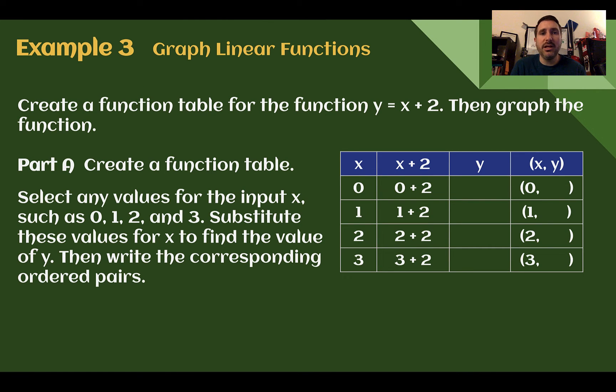Example three, graph linear functions. Create a function table for the function y equals x plus two, then graph the function. So first, let's create a function table. Here, they made one for us. We want to select appropriate input values. Since we have this as our rule, it doesn't necessarily matter what they are, but whole numbers are generally going to be easier when we're graphing, which is our end goal. So let's pick some fairly easy numbers: zero, one, two, and three. If we plug them into our rule, which is just take x, add two, then we can get our outputs. So if I plug in zero, zero plus two is two. If I plug in one, one plus two is three. Two plus two is four, three plus two is five. I took my input, added two, got my output.